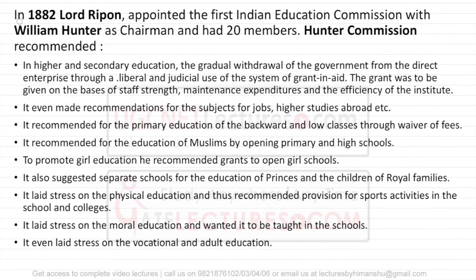After the revolt of 1857, control of the East India Company ended and the whole country went directly under the Queen's Rule. In 1882, Lord Ripon appointed the first education commission under the chairmanship of William Hunter, which had 20 members. The Hunter Commission gave many recommendations.